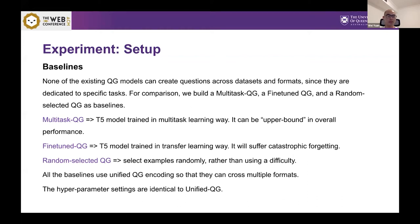Since none of existing QG models have created questions across datasets and formats since they are dedicated for specific tasks, we use three baselines. Multi-task QG, which is T5 trained in multi-task learning way, fine-tuned QG which is learned in transfer learning way, and random select QG which selects examples randomly rather than using the difficulty.